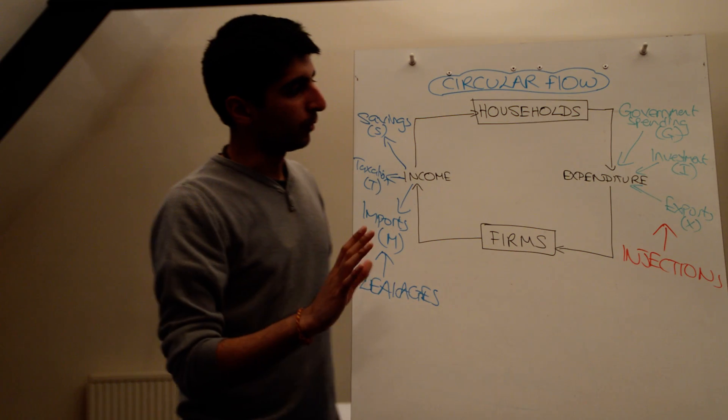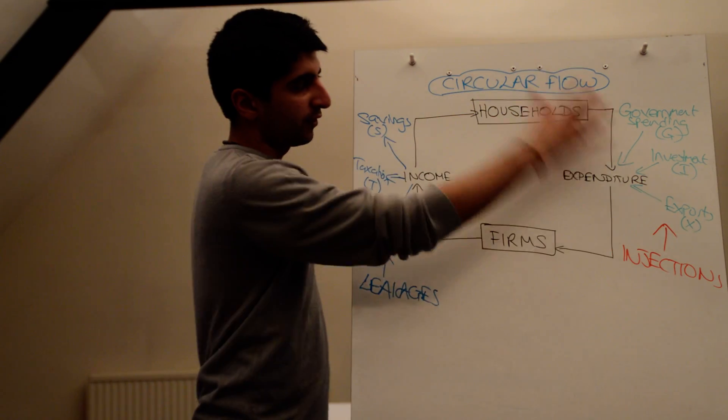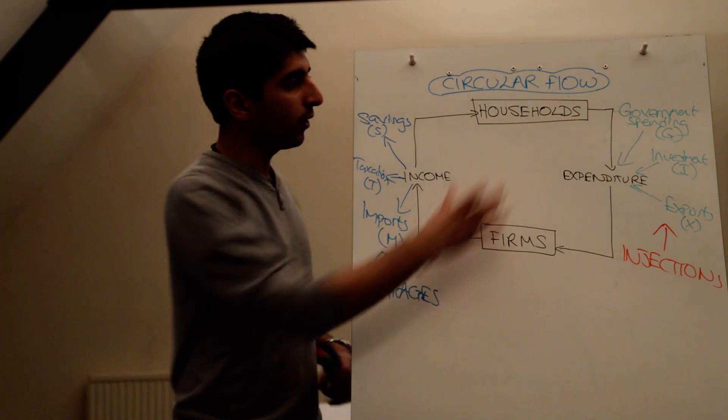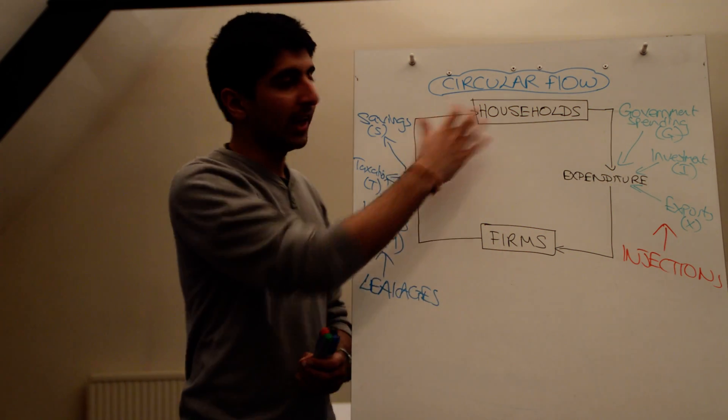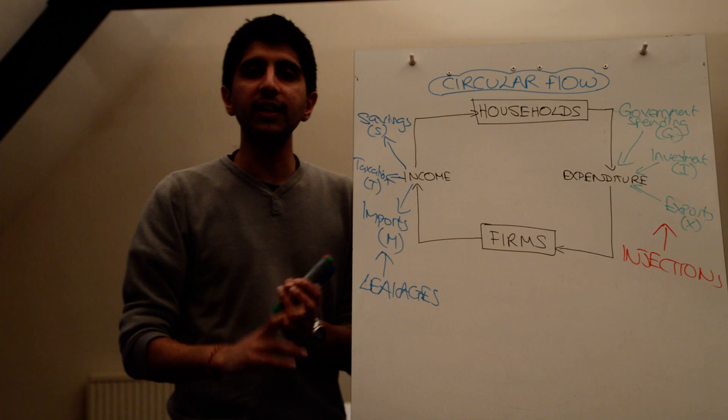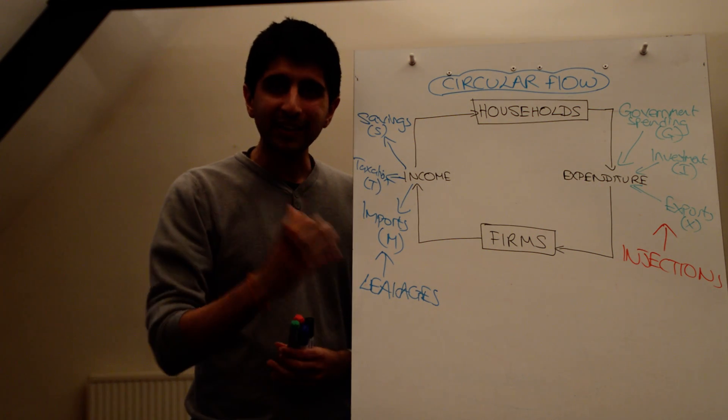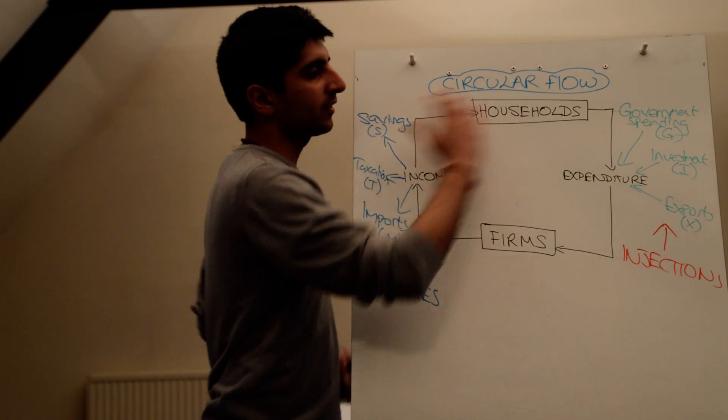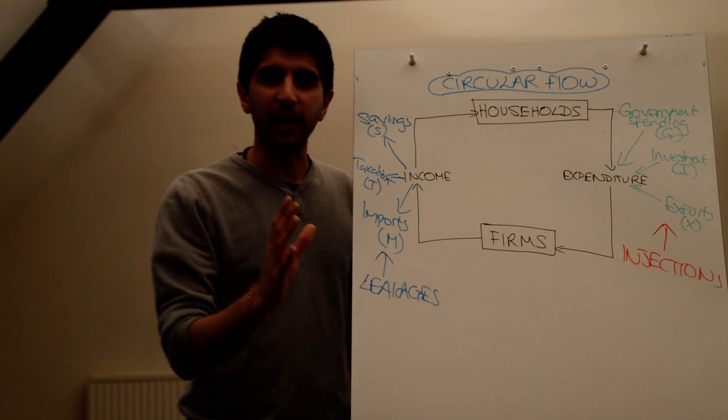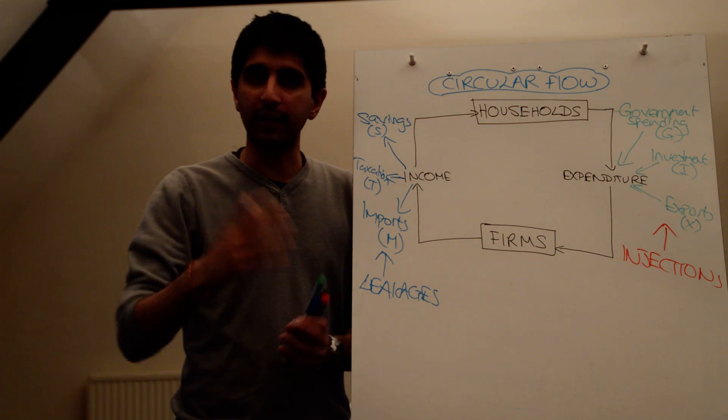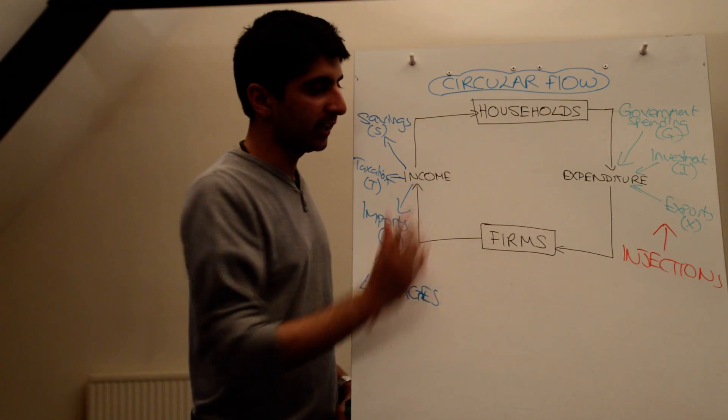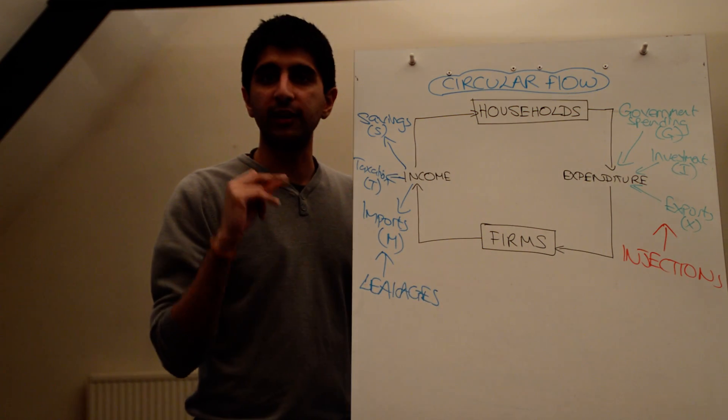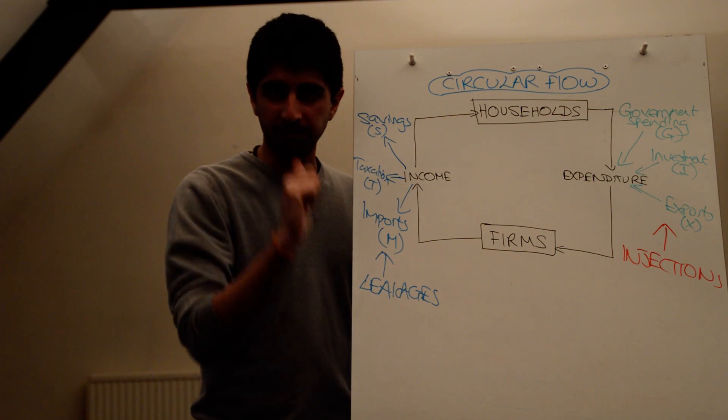That's known as short-term growth. The actual size of this flow can also increase if there are more households, if the quality of the labour increases. So basically, if the quantity and quality of the factors of production increase, then the size of this flow can increase as well, and that will be long-term growth, which we're going to get into later on. But very basically, this is the circular flow. Injections, the leakages. If injections exceed leakages we see growth. Make sure you learn this very well. See you next time, thank you.